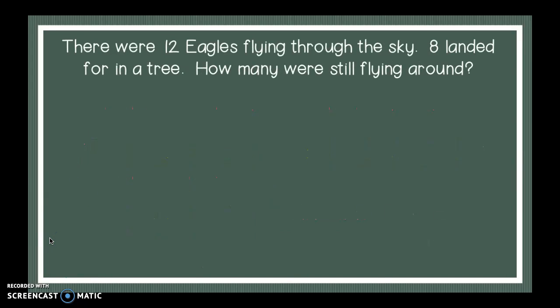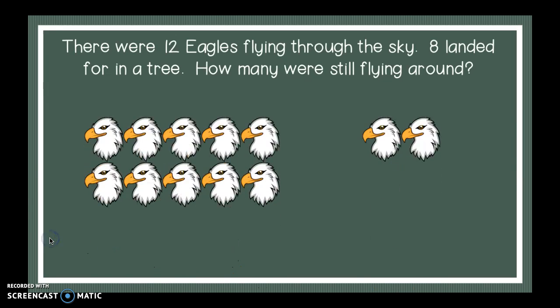If you haven't erased your board, go ahead and do that now. Otherwise, we can continue. All right, this one says there were 12 eagles flying through the sky. Eight landed on a tree. How many were still flying around? Let's see. It says there were 12 eagles flying through the sky. We should probably go ahead and draw a good picture of our 12. Go ahead. Press play when you're ready. All right, here's my 12 eagles.